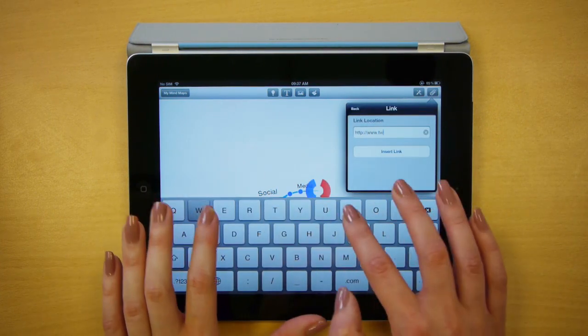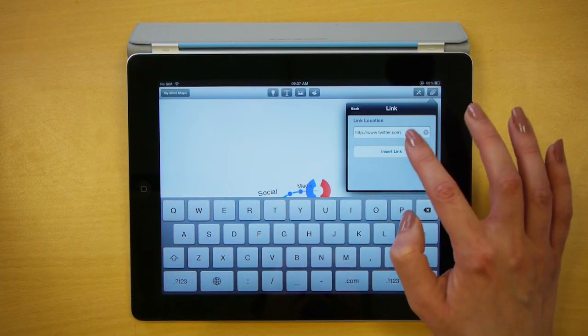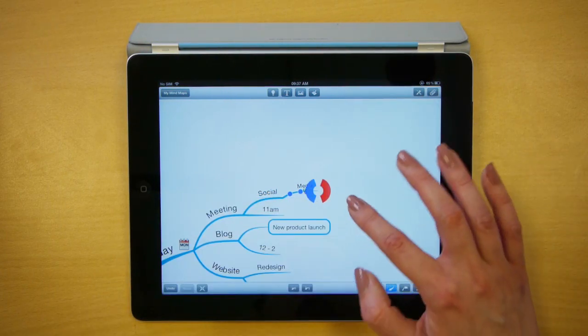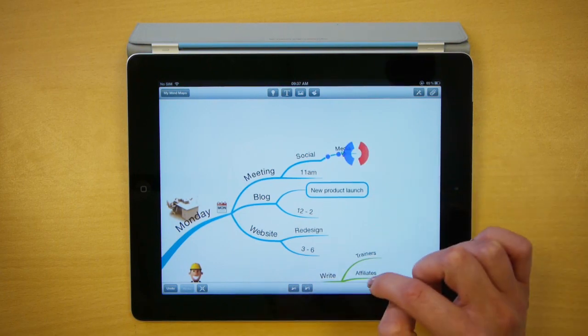Type the URL and select insert link. You can see now that the link icon has been attached to your branch.